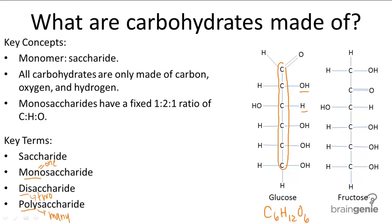Although disaccharides and polysaccharides do not have that same ratio, it's really easy to spot them anyway because you just have to look out for Cs, Hs, and Os. The two most important monosaccharides are glucose and fructose. They're both written as C6H12O6, but their difference is in their structures. Glucose has a double-bonded oxygen at the top, but fructose has a double-bonded oxygen one position from the top — and that's the only difference between the two structures, but it makes all the difference between the monosaccharides.